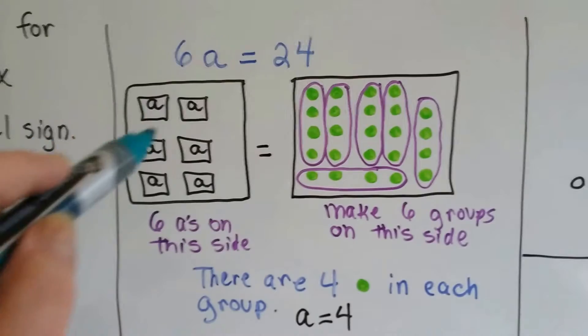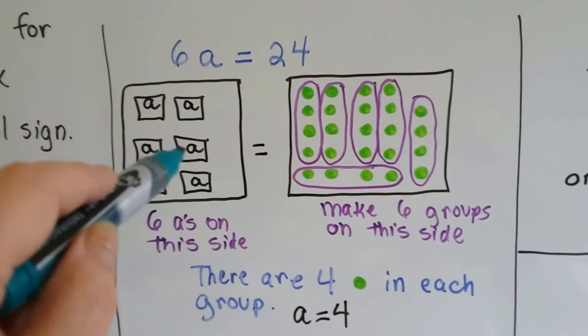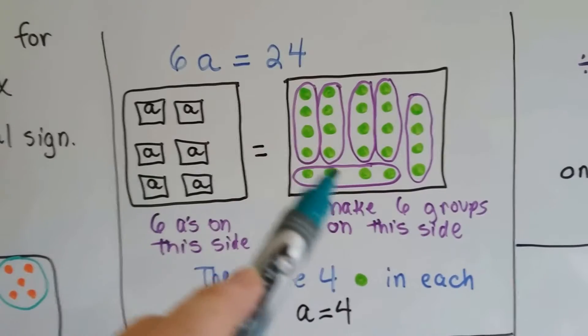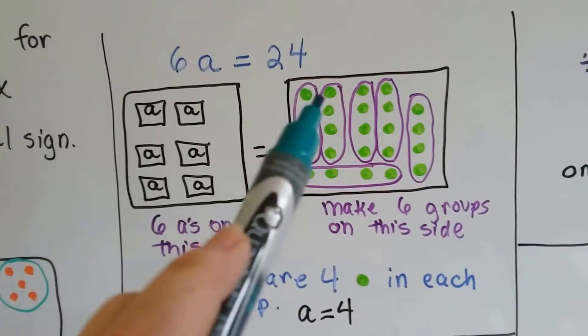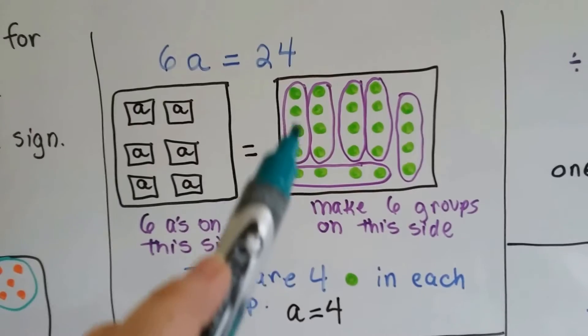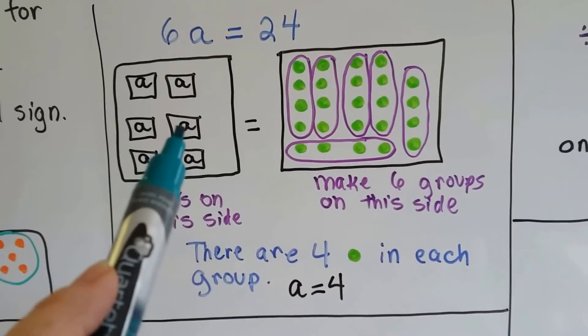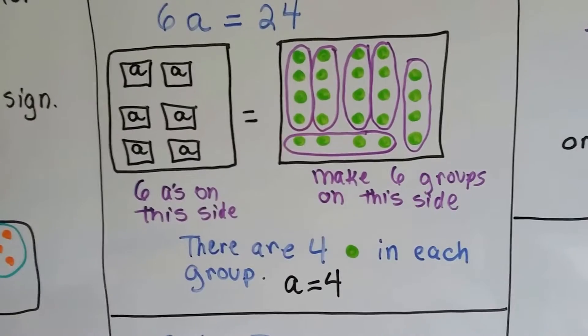6a equals 24. We make six little boxes with a. We draw 24, and we make six groups so that each one represents a box A. We see how many of these little green dots are inside each group, and we know that each A is equal to 4. A equals 4.